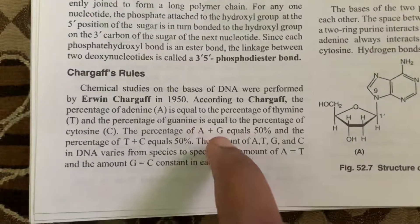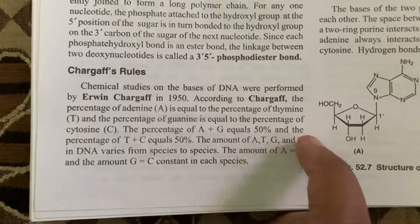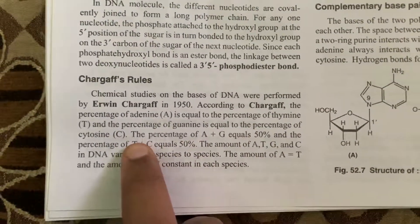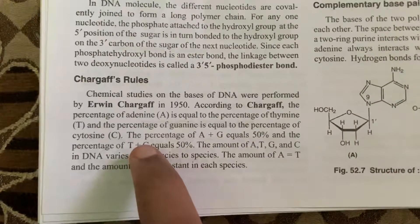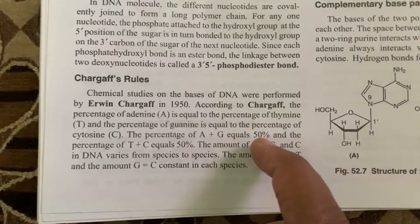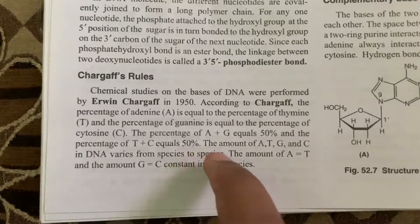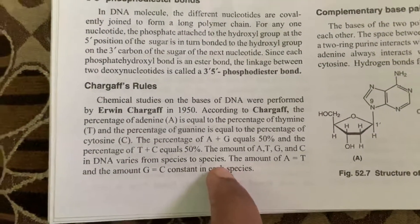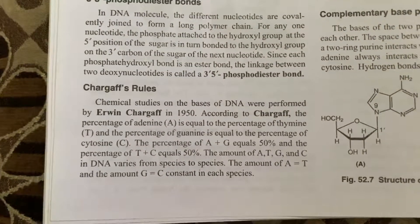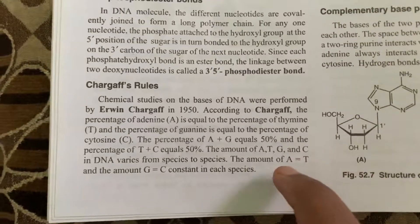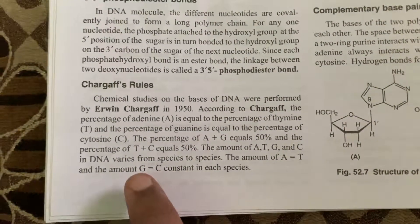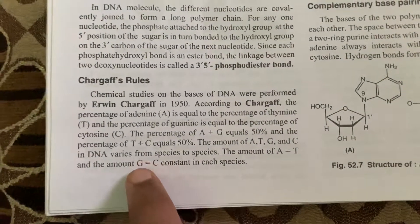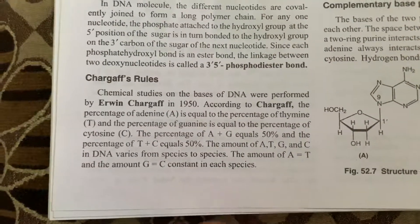So the percentage of A plus G equals 50% and the percentage of T plus C equals 50%. The amount of adenine, thymine, guanine and cytosine in DNA varies from species to species. But if you know the amount of adenine, you can tell the amount of thymine because adenine will always pair with thymine. If you know the amount of guanine, you can tell the amount of cytosine. So if you know adenine and guanine, you can tell thymine and cytosine, because it is constant in each and every species.